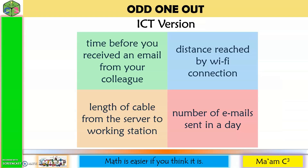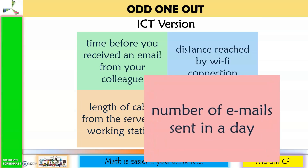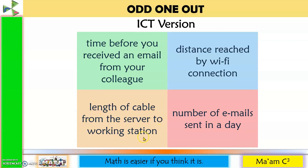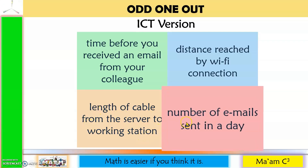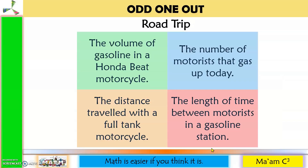Next group: time before you receive an email from your colleague, distance reached by Wi-Fi connection, length of cable from the server to working station, and number of emails sent in a day. The odd one out is the number of emails sent in a day, because time, distance, and length of cable are all measurable, while the number of emails is a countable data.